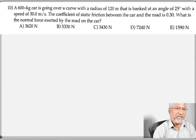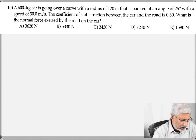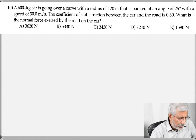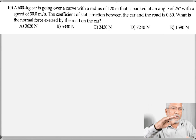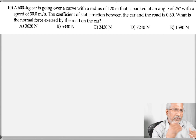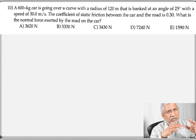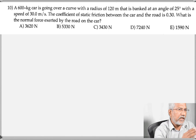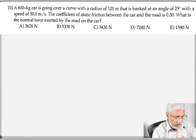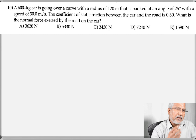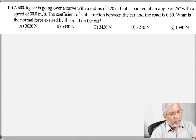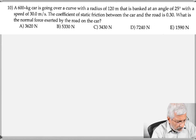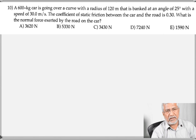Now here is the second question. A 600-kilogram car is going over a curve with a radius of 120 meters, banked at an angle of 25 degrees. Banking means the outer side of the road is slightly higher than the inner side at curves, to keep the car on the road. The car is taking the curve at 30 m/s. The coefficient of static friction is 0.30. What is the normal force exerted by the road on the car?